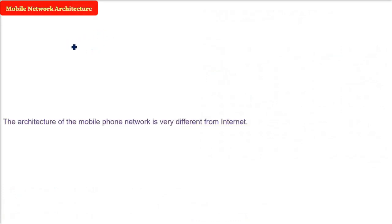But the architecture of the mobile phone network is quite different from the internet. In the internet, we have different tiers: Tier 1 like the main transit providers such as Level 3, Tier 2 ISPs, and Tier 3.